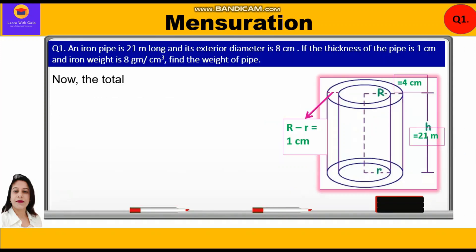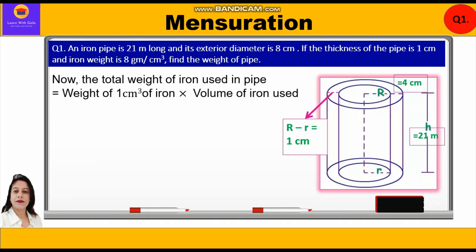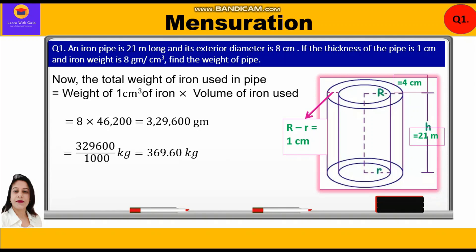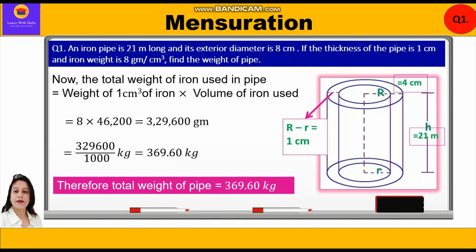Total weight of iron used in pipe equals weight of one cubic centimeter of iron multiplied by volume of iron, which gives 329,600 grams. We multiplied the weight per cubic centimeter of iron by the total volume to get the total weight. Converting to kilograms by dividing by 1000, we get 329.6 kg. Therefore, the total weight of the pipe is 329.6 kg.